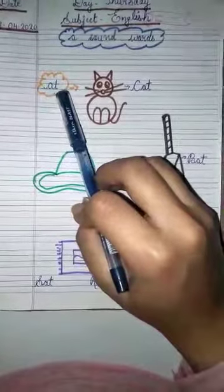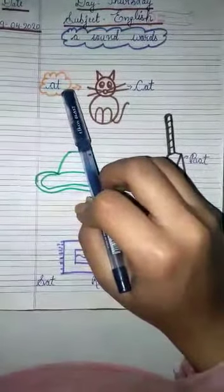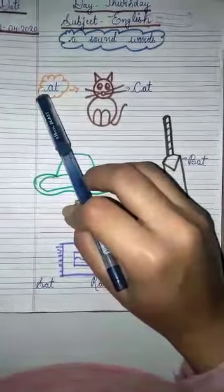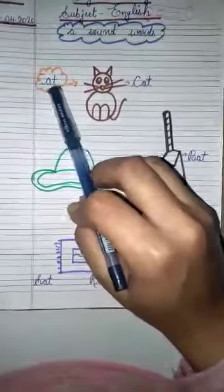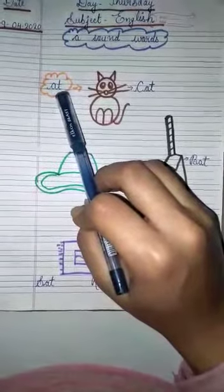So, what does it become? It will become A-T. So, A-T has a sound A-T.